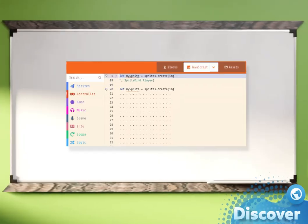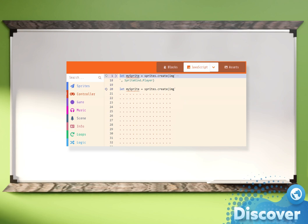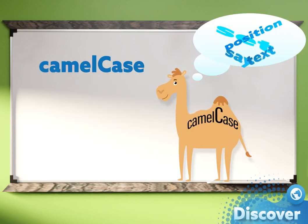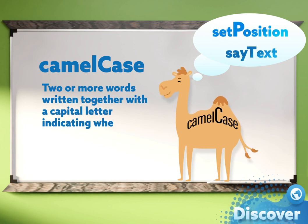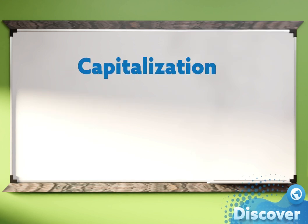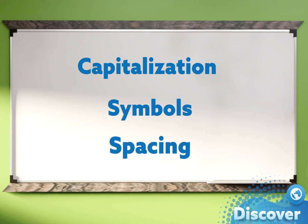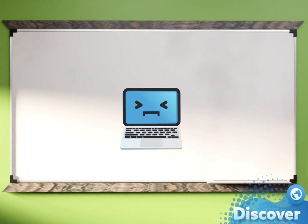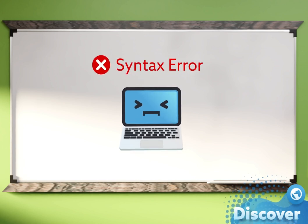When coding in JavaScript, syntax is very important. Sprite, variable, and function names should be written using camel case, where capital letters are used to show where spaces should be. Things such as capitalization, symbols, and spacing matter in text-based coding, and the program will not run if there are syntax errors in it.